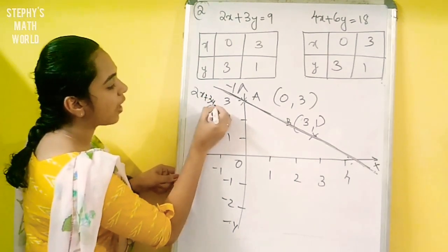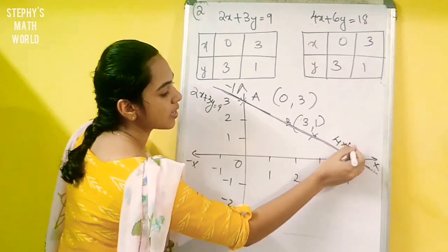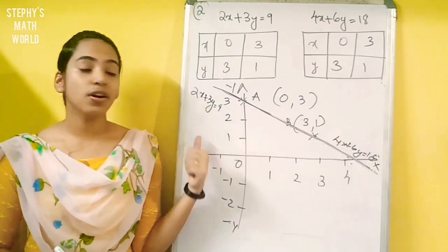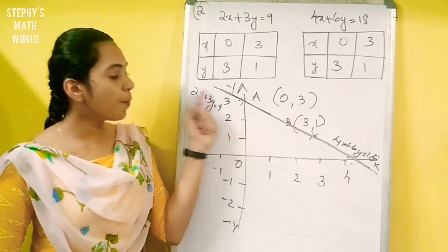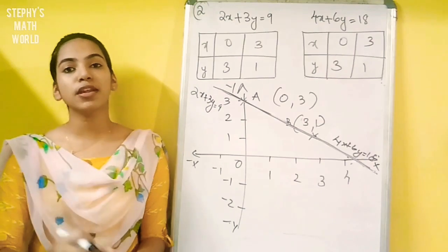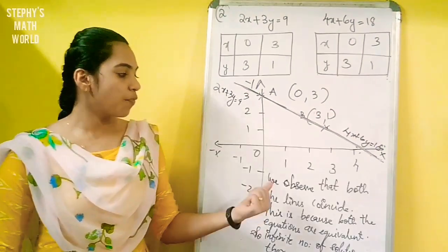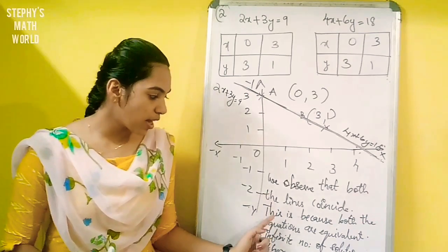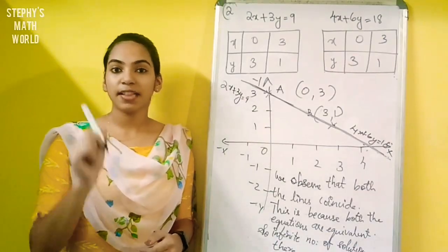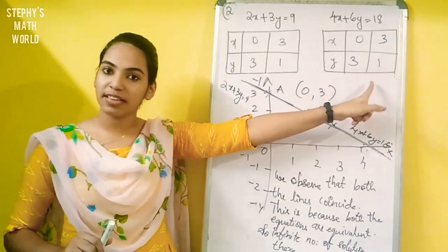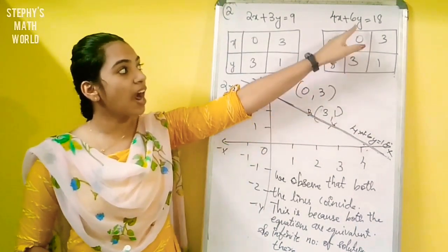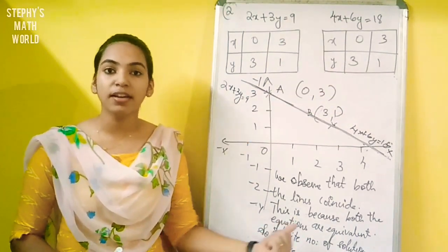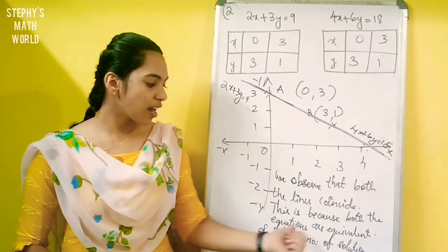2x plus 3y is equal to 9 is one line. 4x plus 6y is equal to 18 is the other line. We conclude that these two lines coincide. That's why we have common points. There are two equations, and that's why we say an infinite number of solutions are present. Both equations are equivalent.